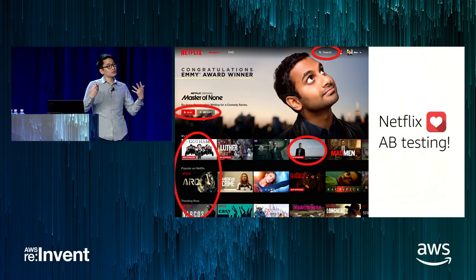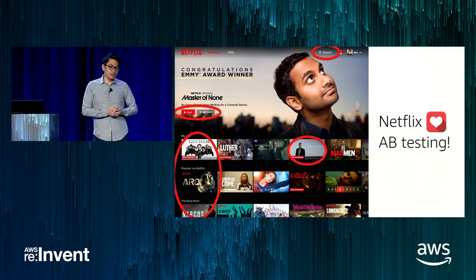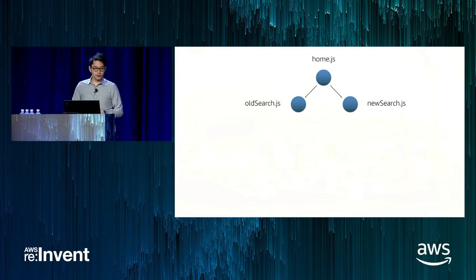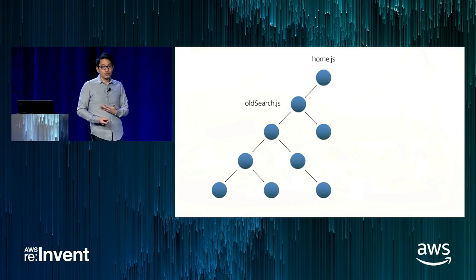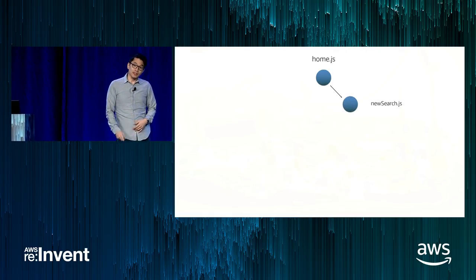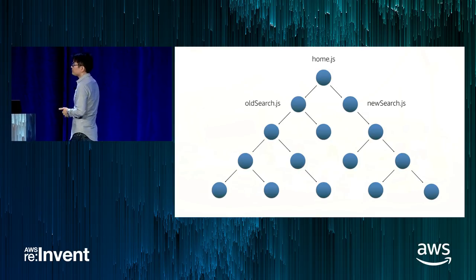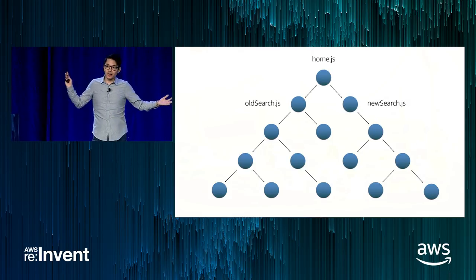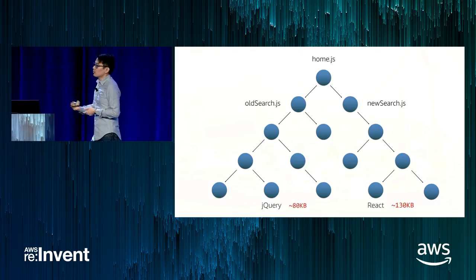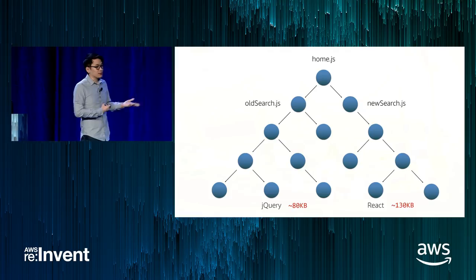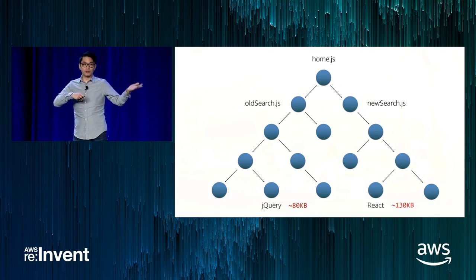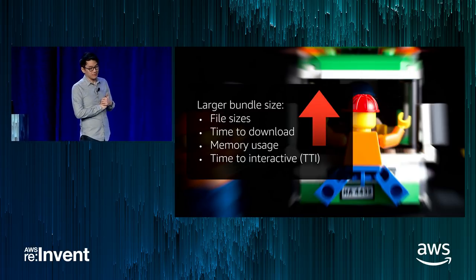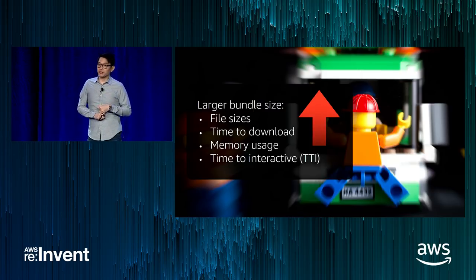Let's look at what it might look like if we were to A/B test the search experience. We've got two variations: an old search experience and a new search experience. Ideally, if you get the old search, you'd get only the dependencies required for it, and likewise for new search. But what if new search uses a different framework — say, new search is using React and old search was using jQuery? Now we're actually sending a ton of stuff we don't really need. These increased file sizes mean more time to download more stuff, increased memory usage, and increased time to interactive.